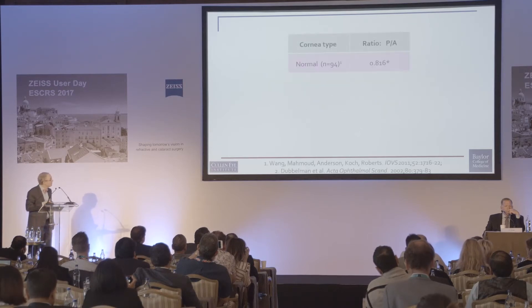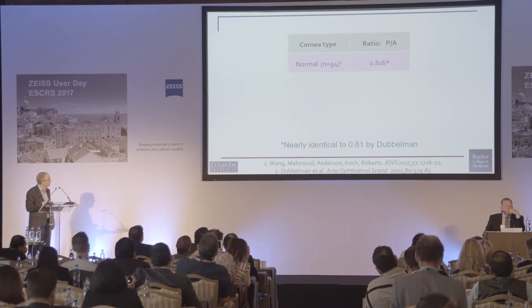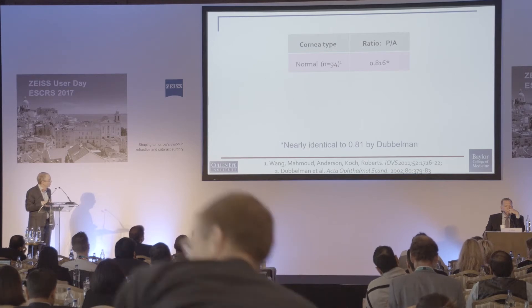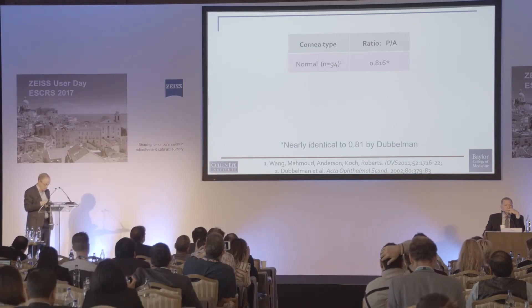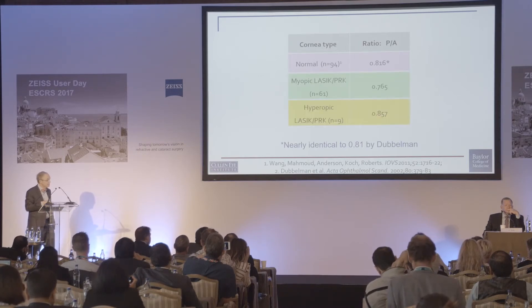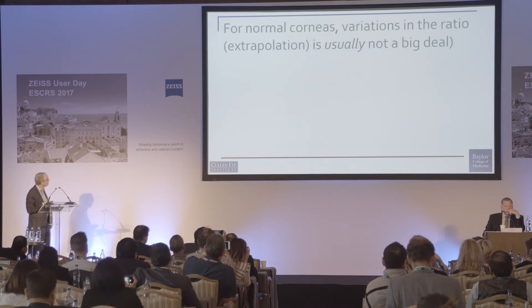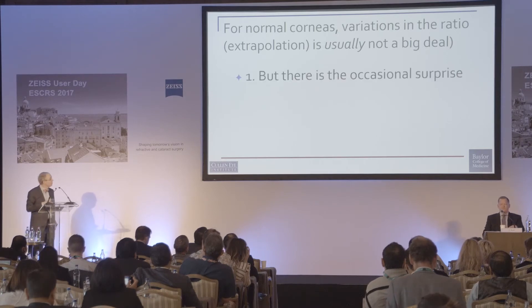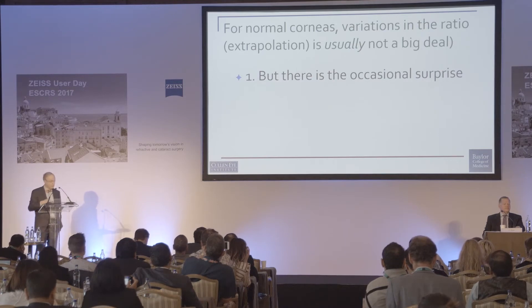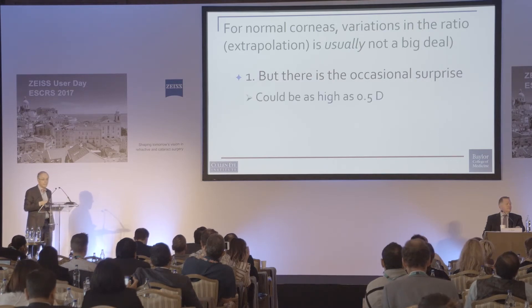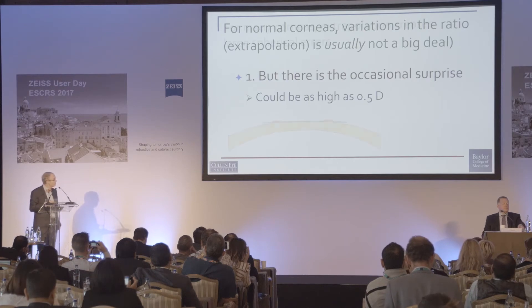In normal eyes, the ratio of posterior to anterior curvature is about 0.81, which is nearly identical to what was reported by Dubbelman in 2002. In myopic LASIK eyes it's lower, and in hyperopic LASIK eyes it's higher — meaning you can't use the front in those eyes to predict total corneal power. Even in normal corneas there are variations in this ratio, and the back of the cornea occasionally doesn't match the front as expected — by as much as half a diopter.